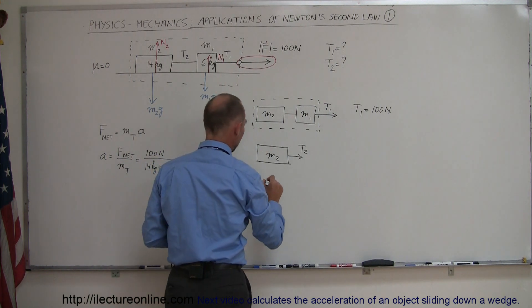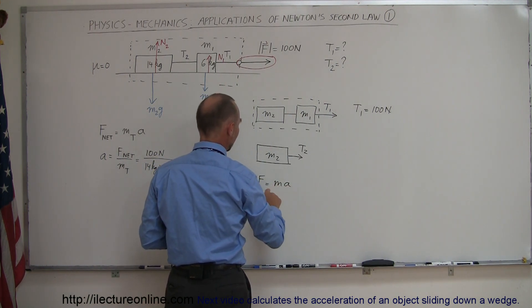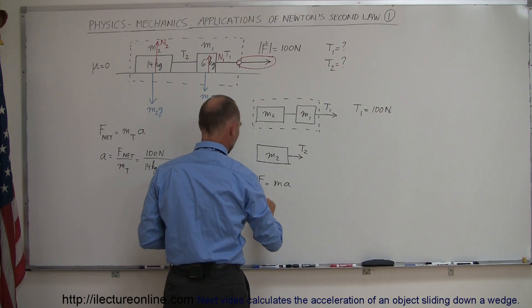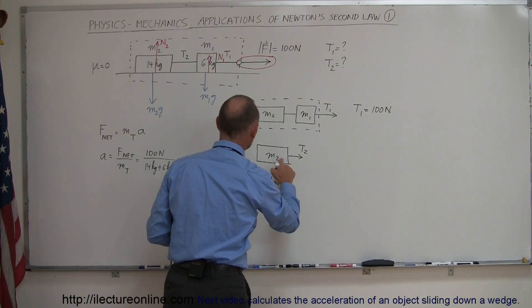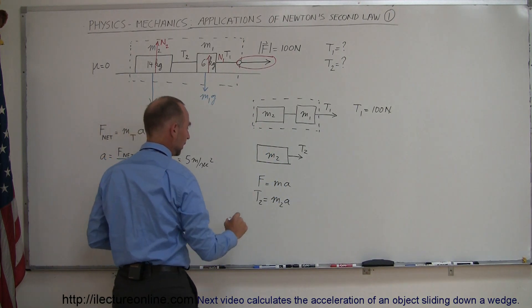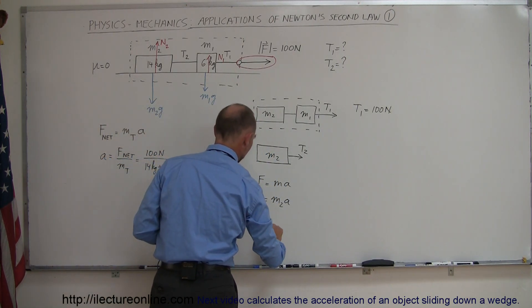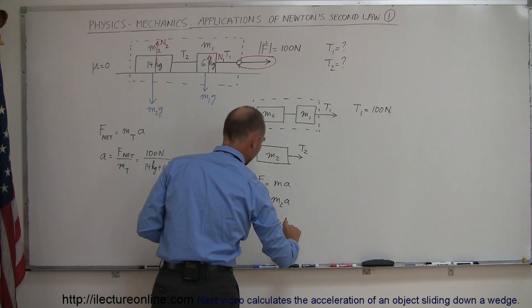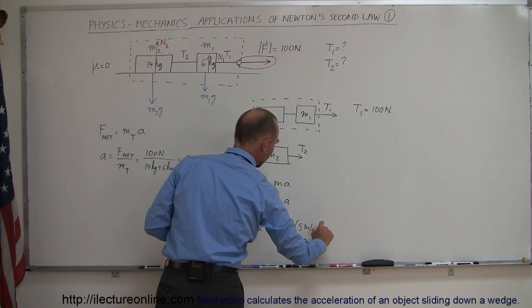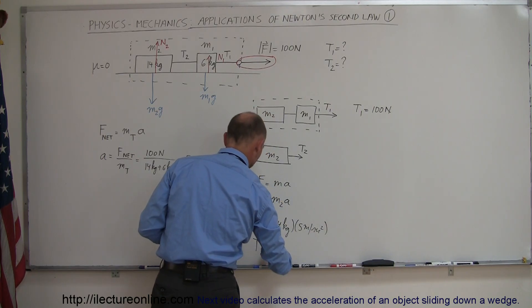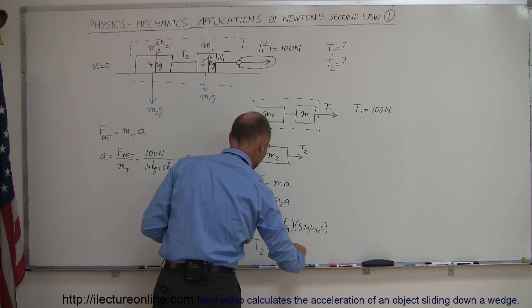From Newton's second law, we can say that F equals MA. In this case we have the tension, tension two equals the mass, mass two times acceleration, which is the same acceleration of the whole system. So we can say that T2 equals 14 kilograms times five meters per second squared, and so the tension in the second string is 70 Newtons.